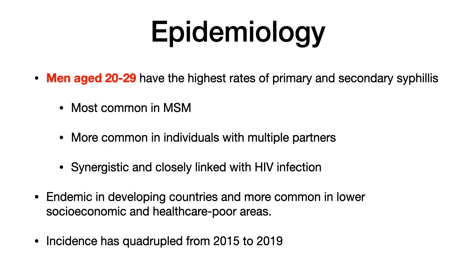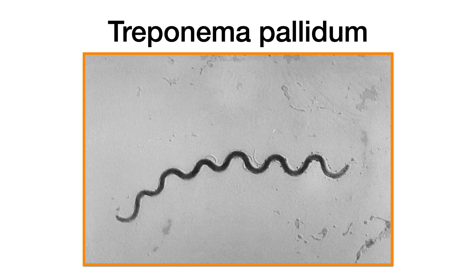The pathogen that causes syphilis is Treponema pallidum. It's a spirochete — here's what it looks like. You may or may not see this image on your exam, but be familiar that if you see this spirally-looking organism, they could be alluding to the spirochete.